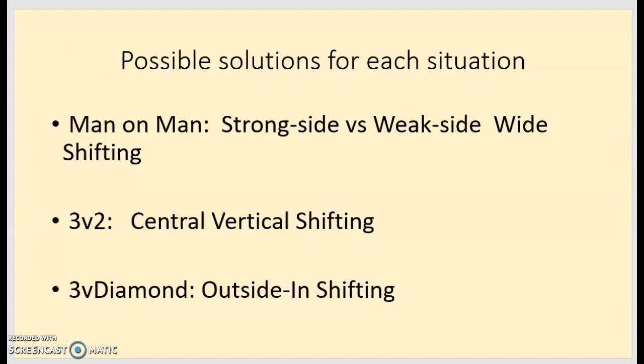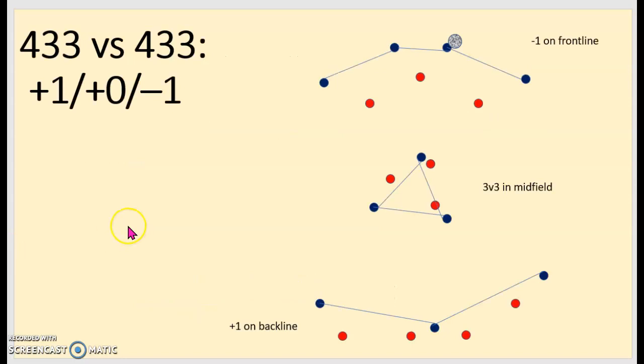So I'll talk you through an example here. Here are solutions for me when I'm not in the green. When I'm man-on-man, when I'm 3v2, or when I'm 3v diamond, how can I work this towards the overall strategy of what I want from my team? And I'll show you examples of these, but these are possible solutions. One is shifting wide, determining a strong and weak side. One is shifting up and down centrally, and one is shifting outside from inside to maintain parity. Okay, so I'll show you some examples of all these with 4-3-3.